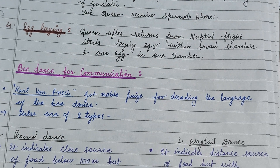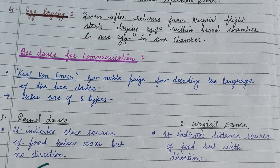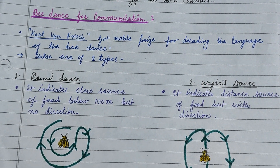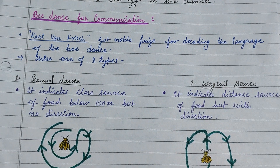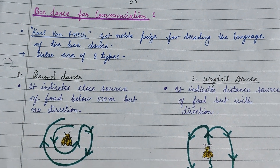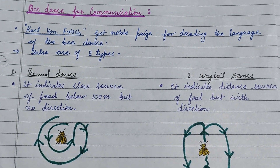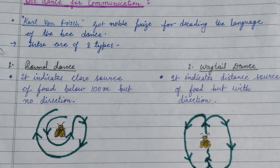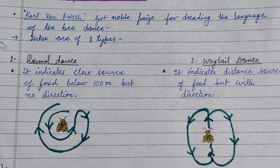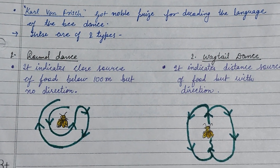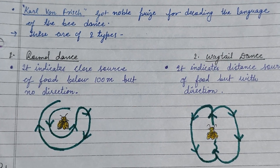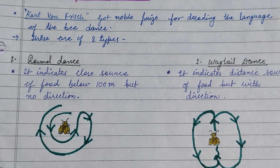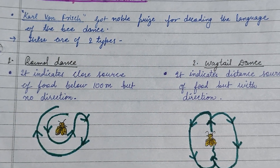Bee dance for communication was discovered by Karl von Frisch, who received the Nobel Prize for this work. There are two types of dance: the round dance and the waggle dance. This concludes the social behavior of the honeybee. Thank you for watching.